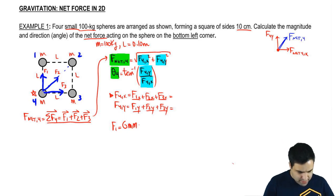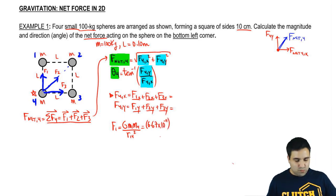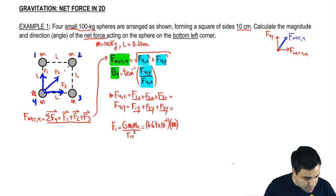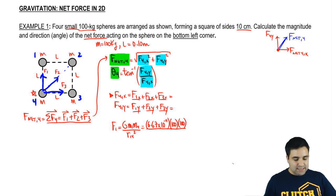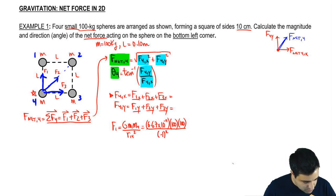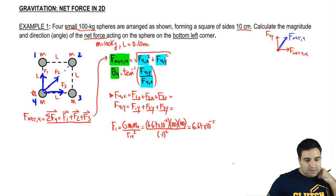It's G, M1, M4, divided by the distance between 1 and 4 squared. So G, which is 6.67 times 10 to the negative 11, mass 1 is 100 kilograms, and 100 here, divided by the distance squared. The distance is L, 0.1 squared. If you solve this whole thing, you get 6.67 times 10 to the negative 5th.